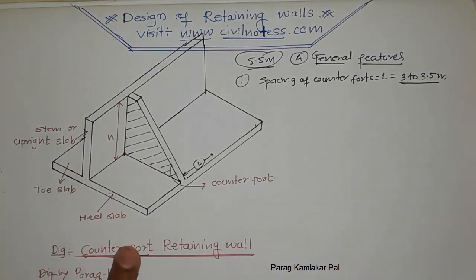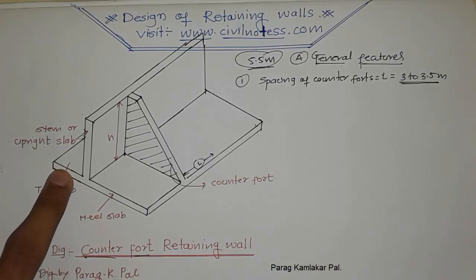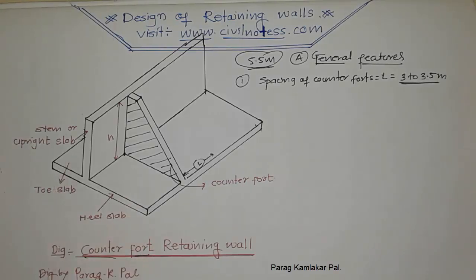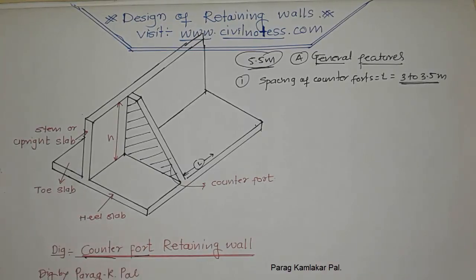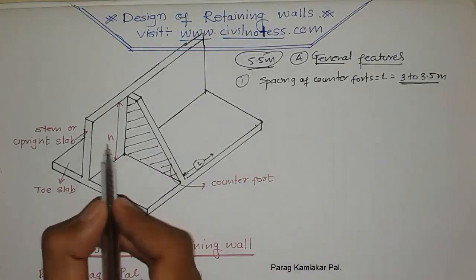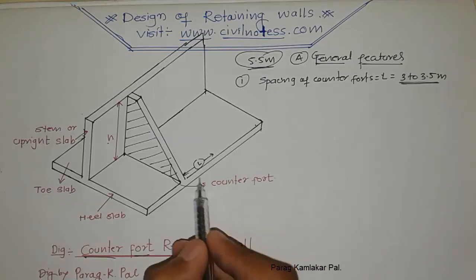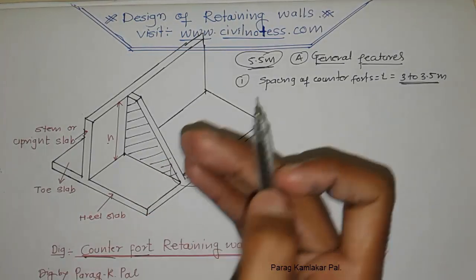The projection from the toe slab is called the toe projection, and the projection from the heel slab is called the heel projection. The height of the counterfort retaining wall is denoted by small h. The counterforts are provided at equal distances denoted by L.